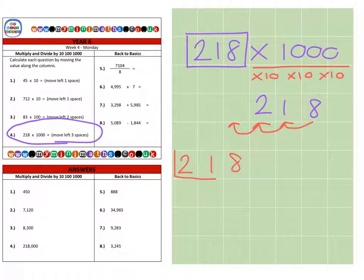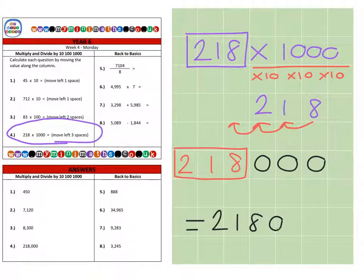So again, ensuring that these digits stick together. And then we have our three zeros, our three blank spaces, our three gaps, giving us a final answer of 218,000.